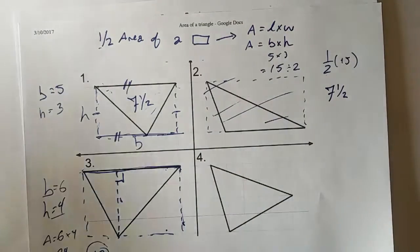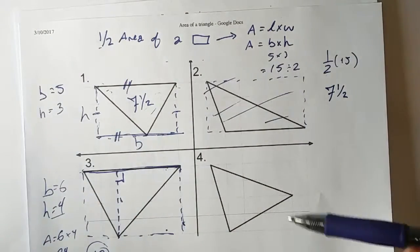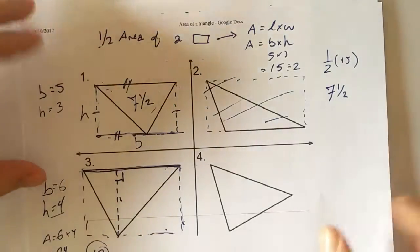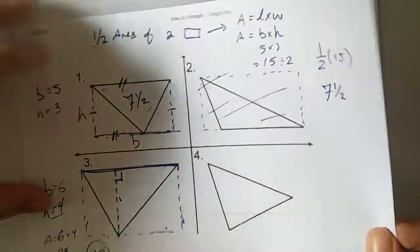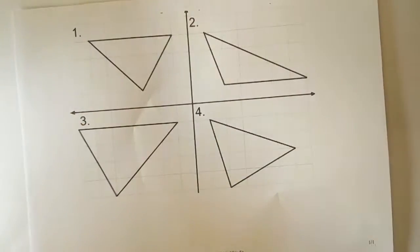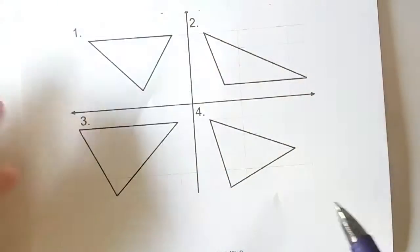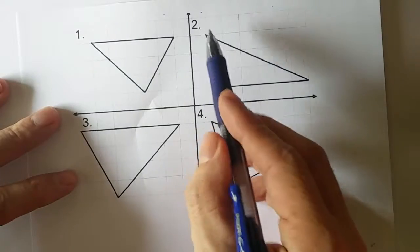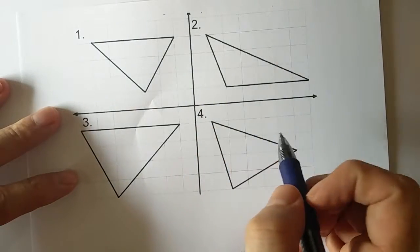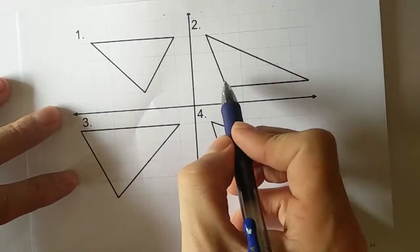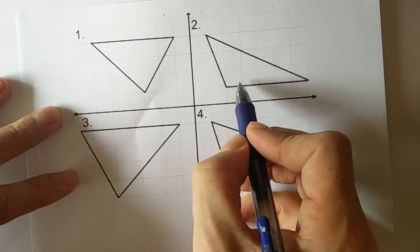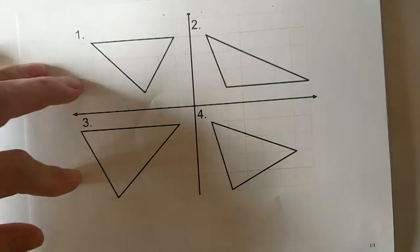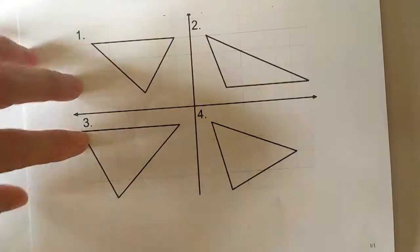Let's look at these other two questions here. I'm going to get a whole new sheet, and we're going to look at just this obtuse scaling triangle. It's an obtuse triangle because this angle is greater than 90 degrees but less than 100.